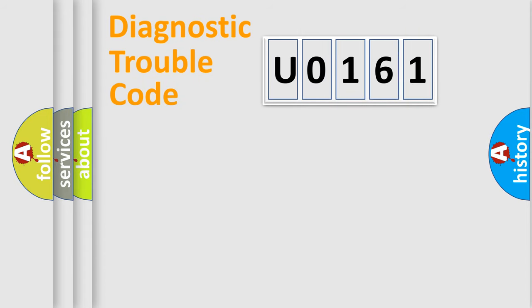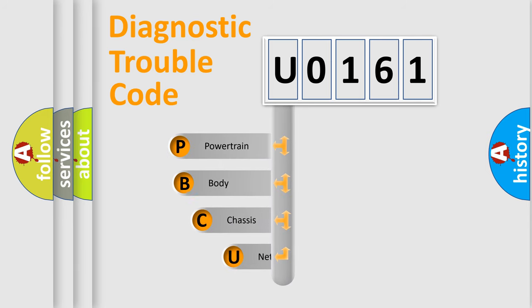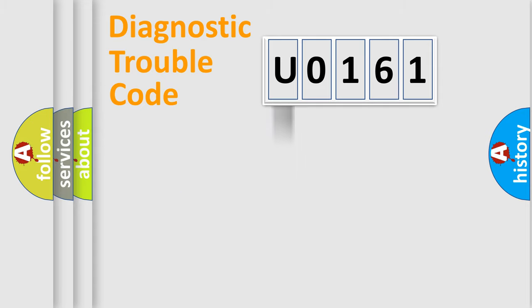Let's do this. First, let's look at the history of diagnostic fault code composition according to the OBD2 protocol, which is unified for all automakers since 2000. We divide the electric system of the automobile into four basic units: Powertrain, Body, Chassis, and Network.